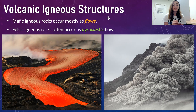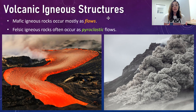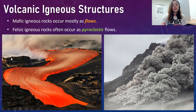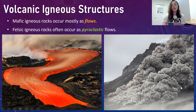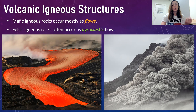Volcanic igneous structures can either be mafic or felsic. Mafic igneous rocks or lavas occur mostly as flows, and felsic igneous rocks occur mostly as pyroclastic deposits or pyroclastic flows. In the picture on the left, we can see a more mafic, less viscous, more fluid flow of mafic lava, whereas on the right we have a pyroclastic flow. I'll go into much more detail on each of these later in the video.